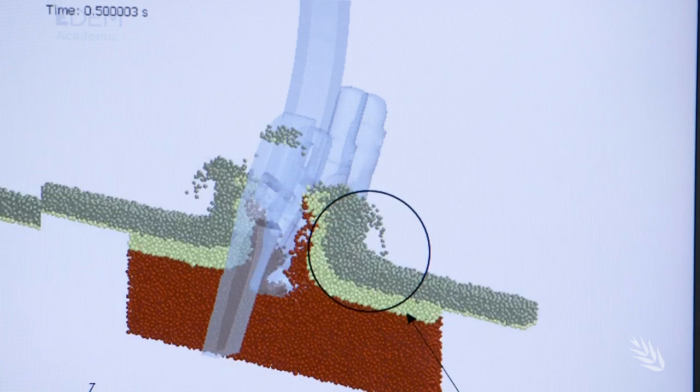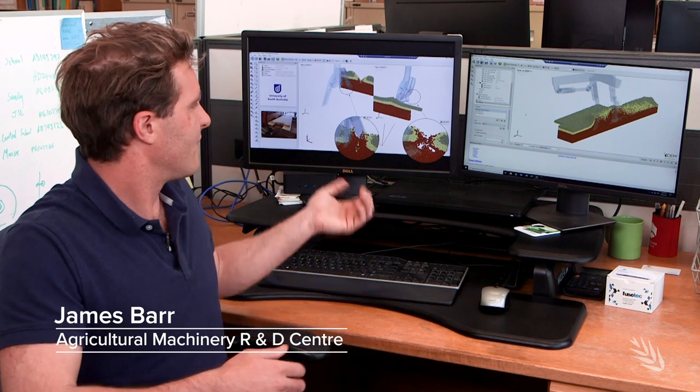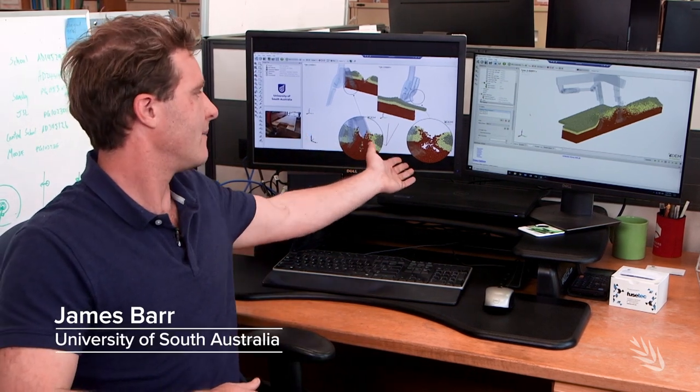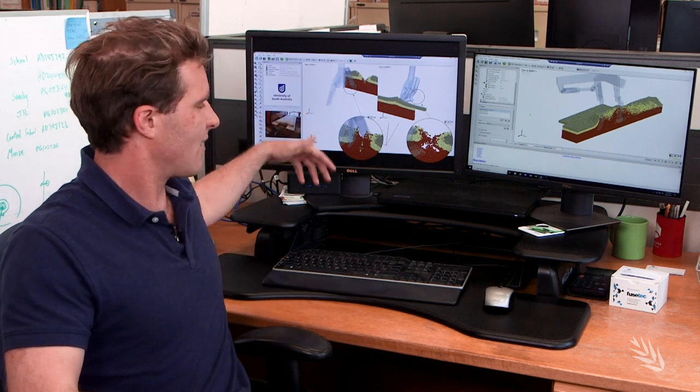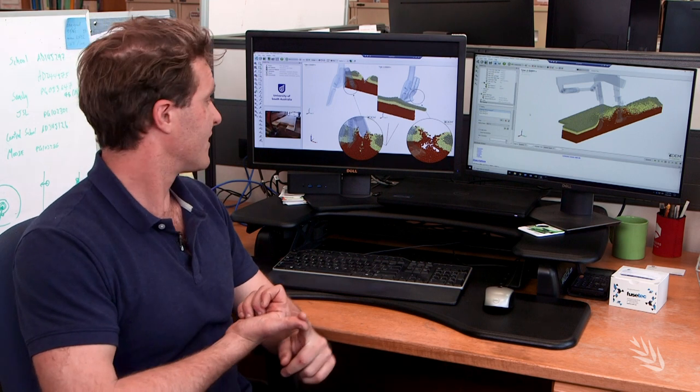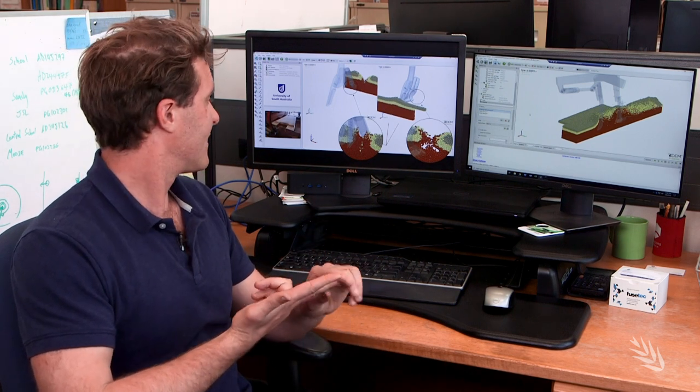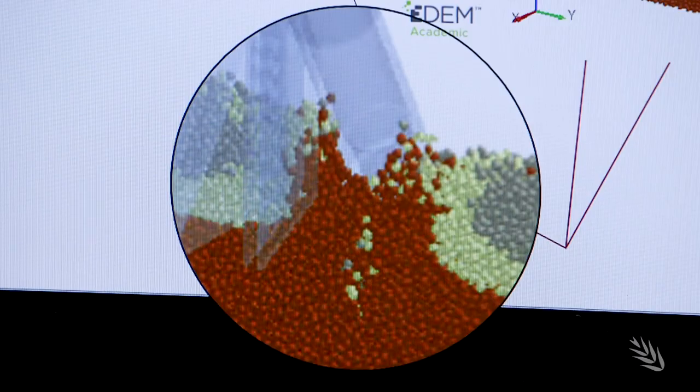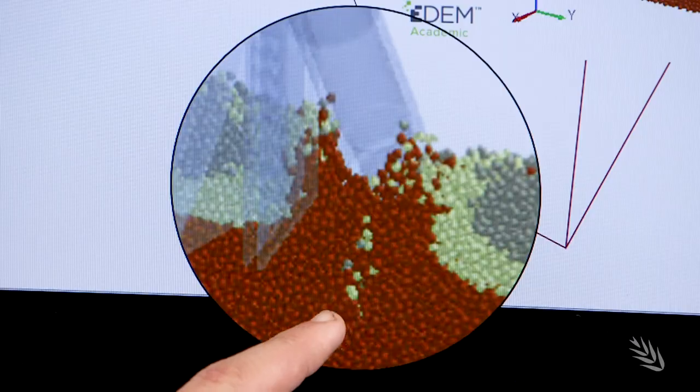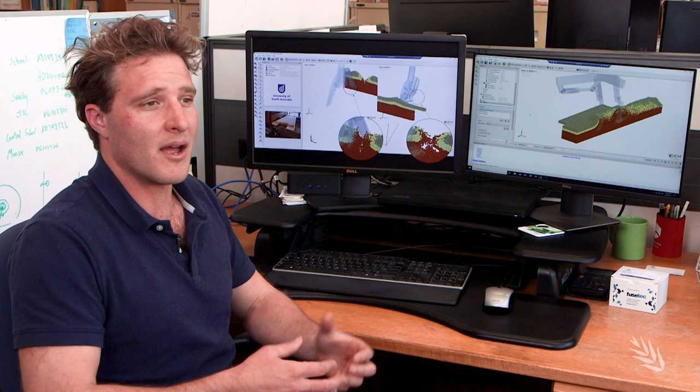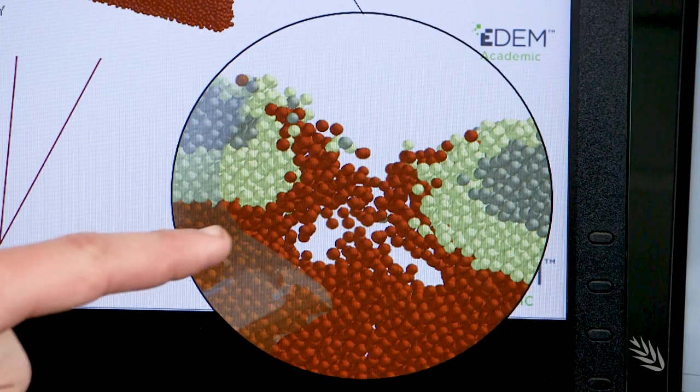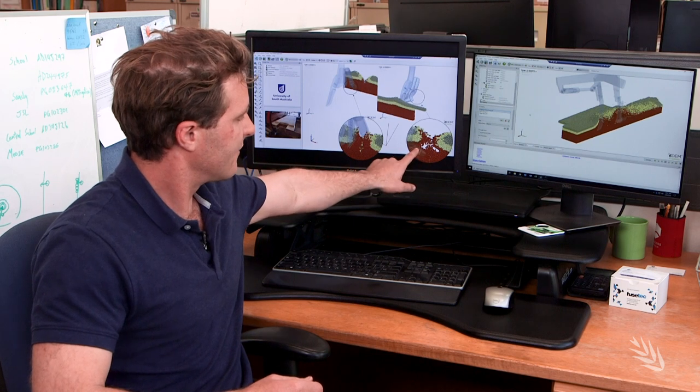The GRDC funded James Barr's postgraduate studies into DEM simulation of seeding machinery. Here we have a standard knife point closer plate system and a paired row system. What we can see is the closer plate system is dragging topsoil, which may contain herbicides, non-wetting soil, and drier soil in general, into the seed zone. You can see the lighter coloured particles representing the topsoil being dragged down below the closer plate and moving into the seed zone. Here we have the paired row opener which is effectively excluding this topsoil from the seed zone.